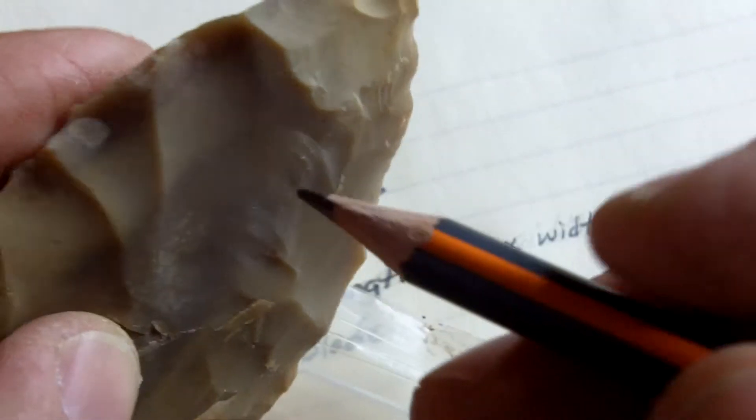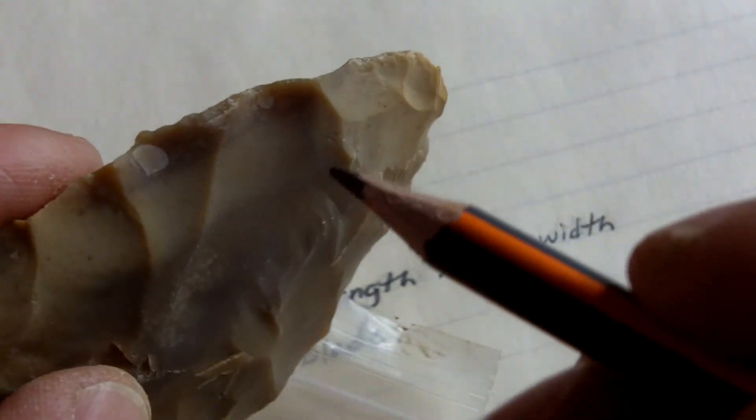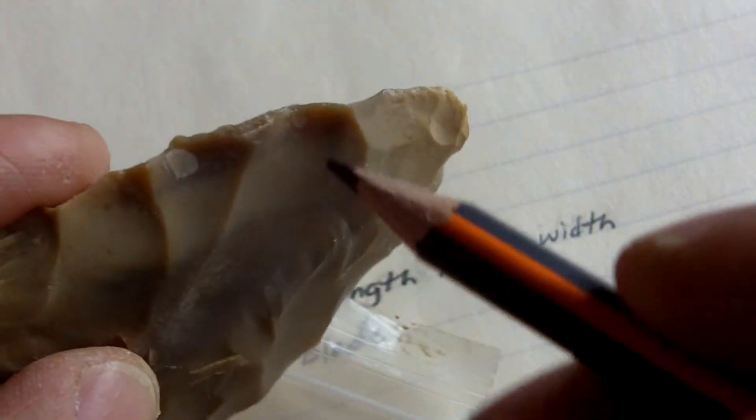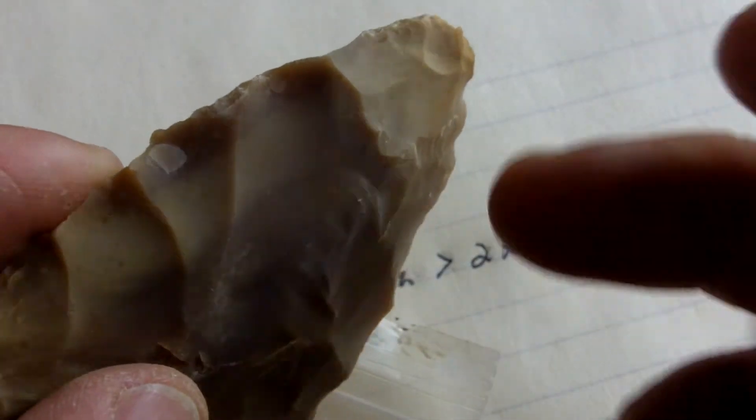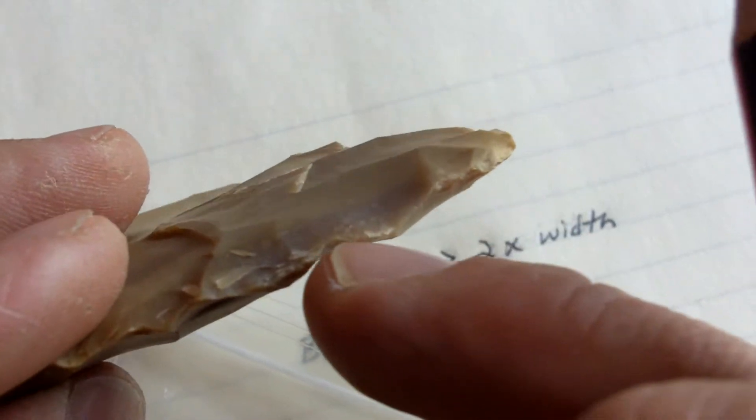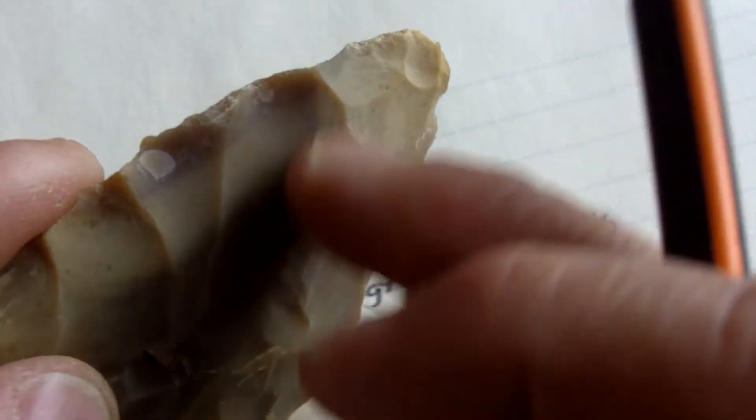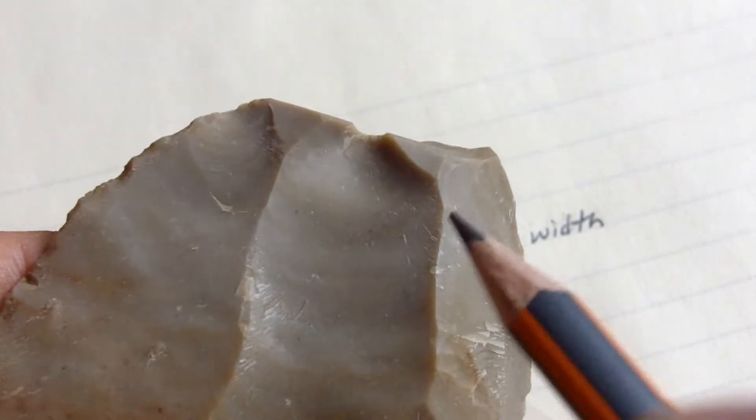If you're having trouble running long flakes, look at your edges. If you're trying to run long flakes and you have real thin edges, obviously you're going to have some trouble. You've got to have a stout platform, in most cases, with most stone, to run long flakes.